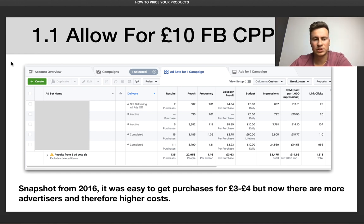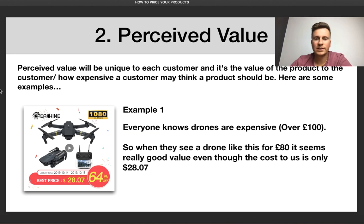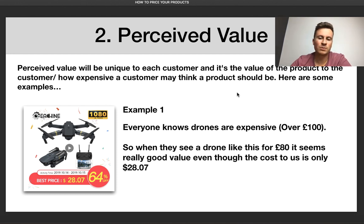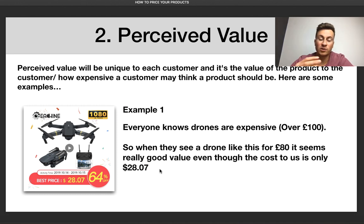Rule number one summary: allow for a minimum £10 Facebook cost per purchase — more is better. Number two is perceived value. Perceived value is unique to each customer; it's how valuable a product is to the customer, or how expensive they think it should be. For example, here's a drone — everybody knows drones are expensive because of the technology and software involved. Most people would expect to pay over £100 for a drone, so advertising it at £80 seems great value, even though the cost on AliExpress is only £28.